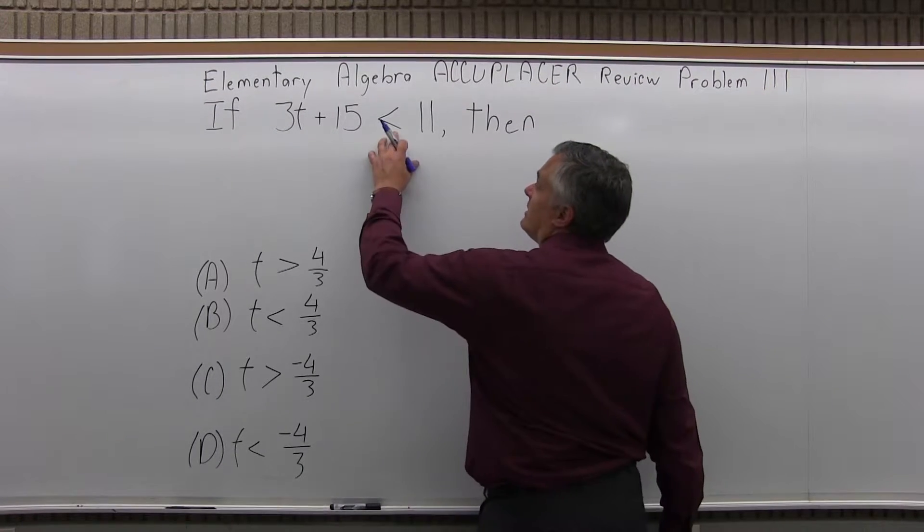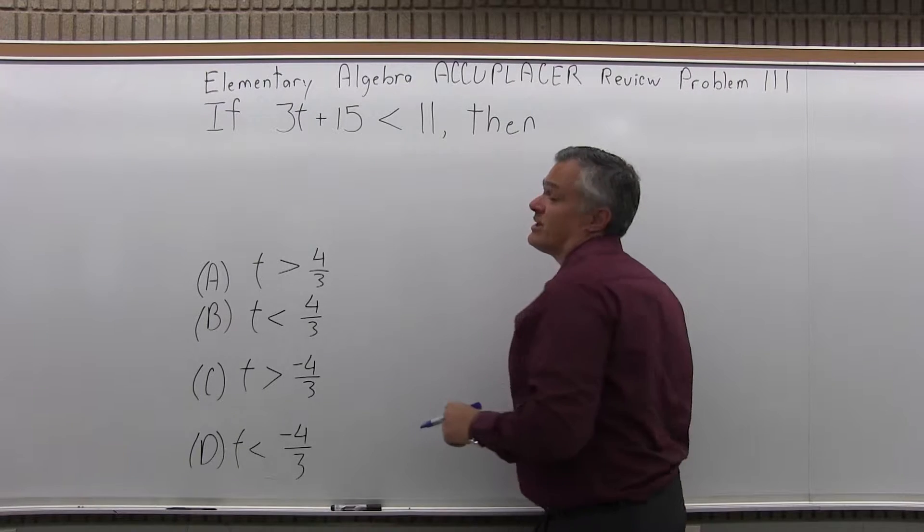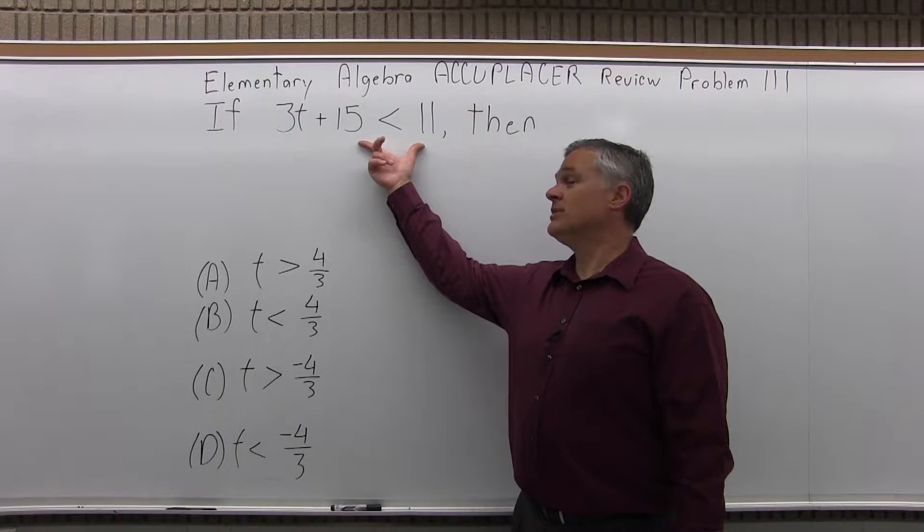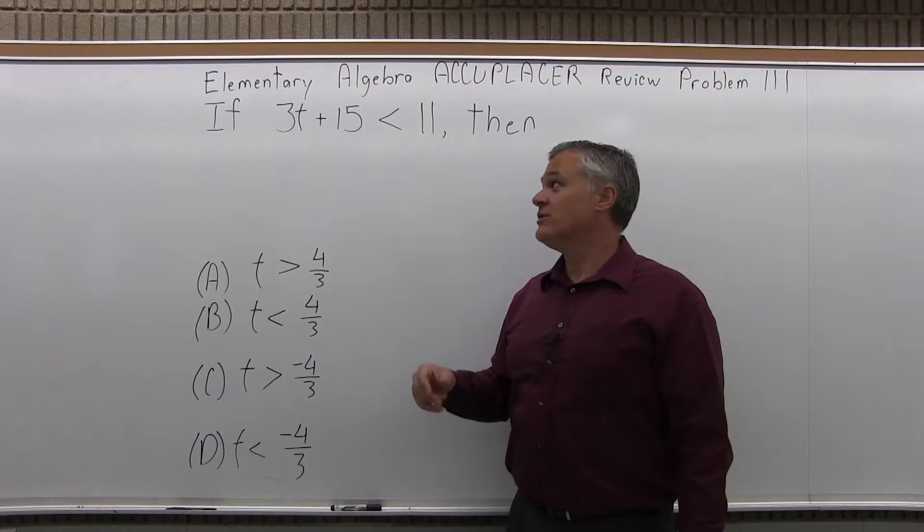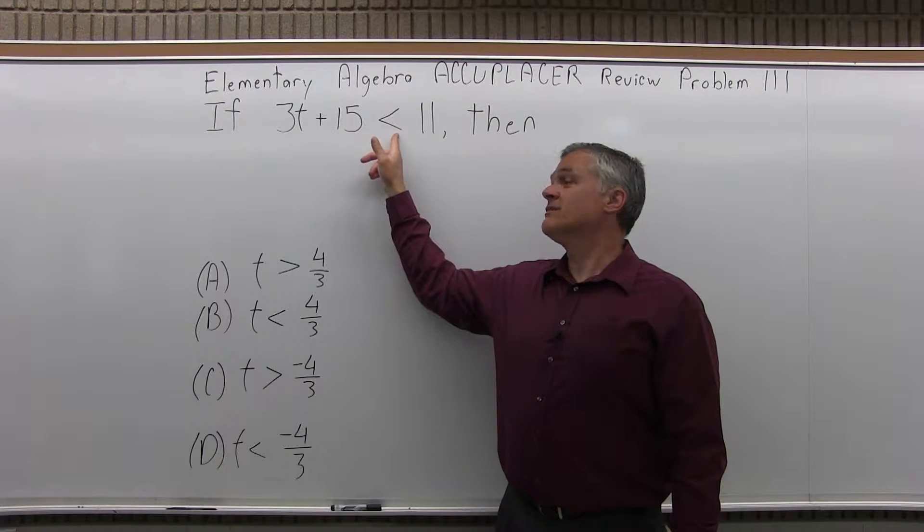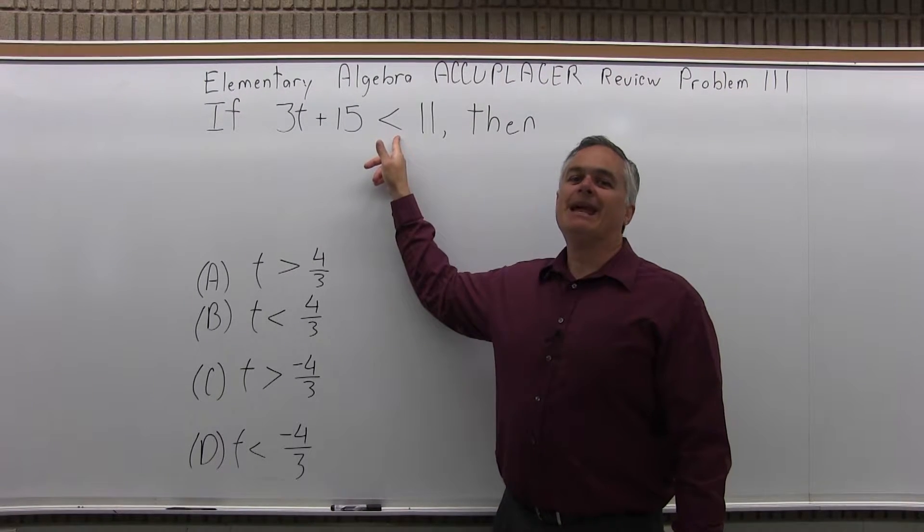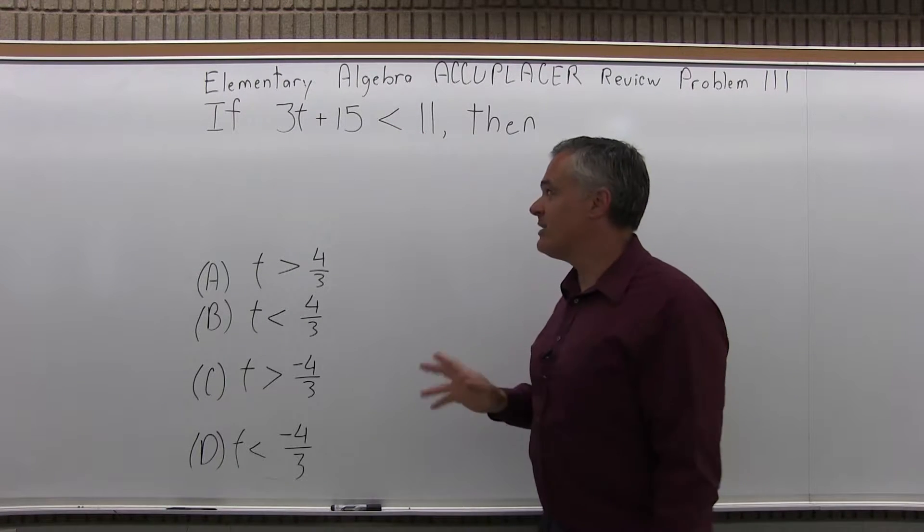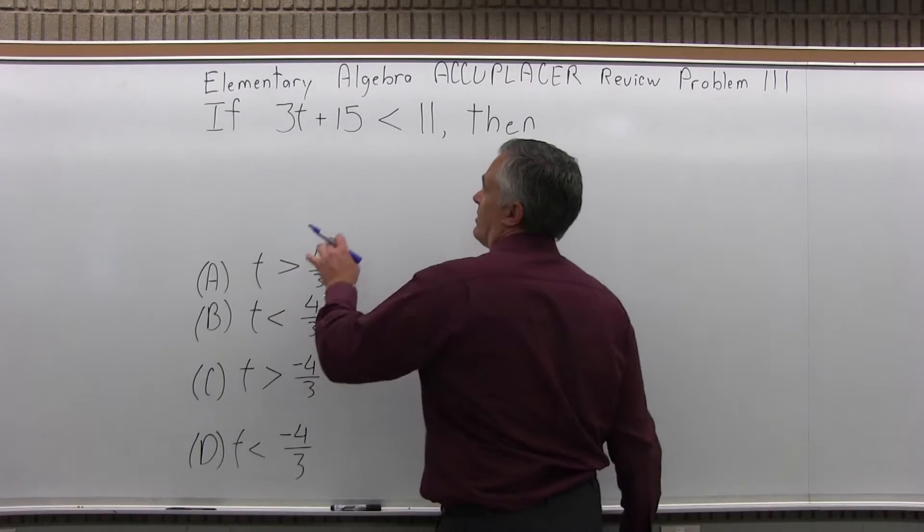Well, solving an inequality is very much like solving an equation. You can do anything you want as long as you do it to both sides of the inequality symbol with one extra feature. If you multiply and divide both sides of the inequality by a negative value, you have to flip the direction it points in. Other than that, it's like a regular equation.